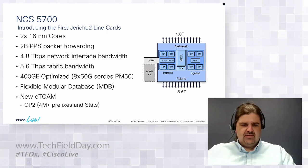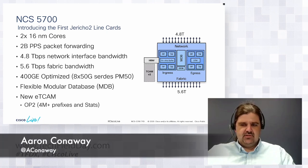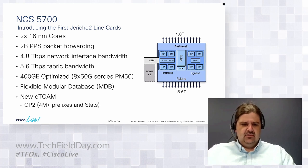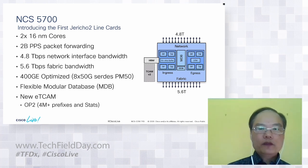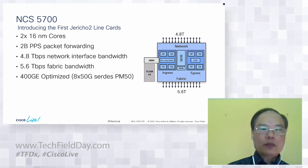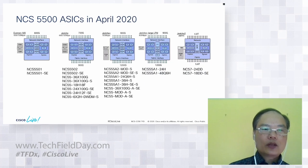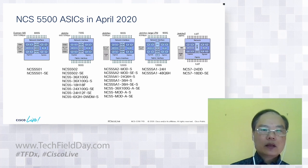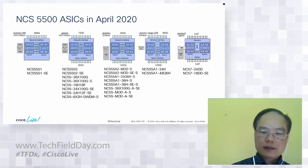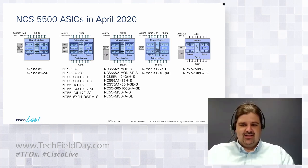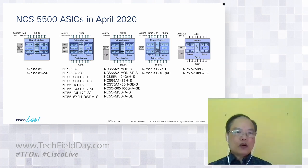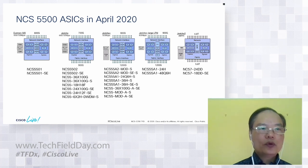Question: How does the fabric bandwidth compare to previous versions of the 5500 models? The fabric bandwidth has to support your network interface bandwidth. Looking back at previous generations — for Jericho Plus, the network bandwidth is 900 gig and the fabric bandwidth is 1.2 terabit. It has to be larger because there will be some overhead on the fabric, so you have to make room for that overhead.